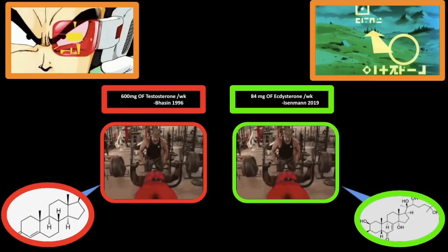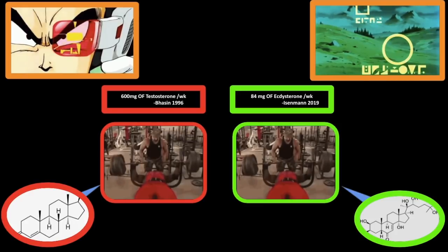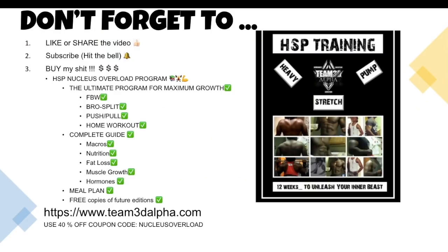Alright guys, let me know what you want me to go over in the next episode of Testosterone Thursday. See you in the comment section. Don't forget to like or share the video, subscribe and hit the bell. And buy my HSP Nucleus Overload Training Program. It's the ultimate program for maximum muscle growth. It includes full body workouts, splits, bro splits, push-pull, home workouts, you name it. Also comes with a complete guide for macros, nutrition, fat loss, muscle growth, hormones, including a meal plan. It's pretty much all my 16 years of experience condensed into one fucking book. You're also going to get free copies of any future editions. So visit team3dalpha.com and you can use the 40% off coupon code Nucleus Overload or you could just buy the shit at full price. Alright guys, I'm out of here.